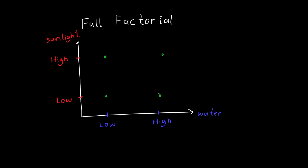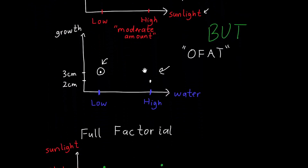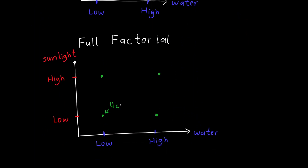We carry out the experiment and find: at a low amount of water and low amount of sunlight we get four centimeters of growth; at a high amount of sunlight and low amount of water, two centimeters; at a high amount of water and low amount of sunlight, two centimeters; and at a high amount of both water and sunlight, we get ten centimeters of growth.